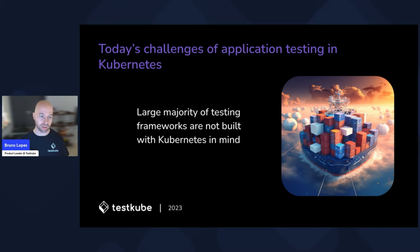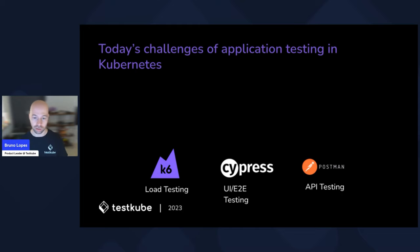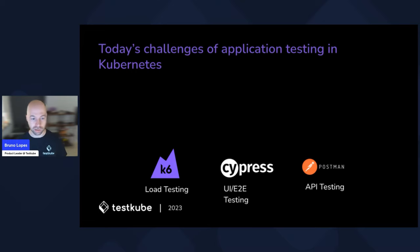So we can start with the challenges of testing in Kubernetes. The first one is that the large majority of testing frameworks are not built with Kubernetes in mind. Each testing tool — for example, k6, Cypress, or Postman — is made to solve particular issues with testing for a certain use case. In the case of k6, it's really built to solve load testing. Cypress is for UI or end-to-end, and Postman for API. These tools do their job very well, but the common pattern is that they are not built exactly with Kubernetes in mind.